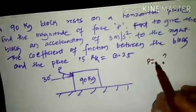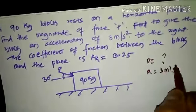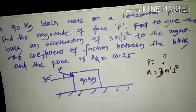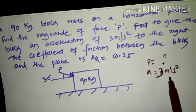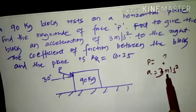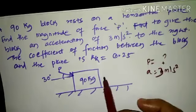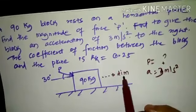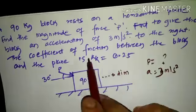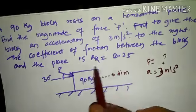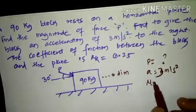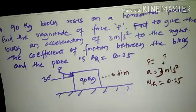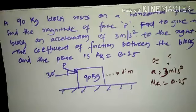We need to give an acceleration of 3 meters per second squared, so the acceleration value has been fixed. The magnitude of force P needs to be determined such that the acceleration value comes out to 3 m/s², and the block moves towards the right-hand side — that is the direction of impending motion. The coefficient of kinetic friction μk is 0.25.